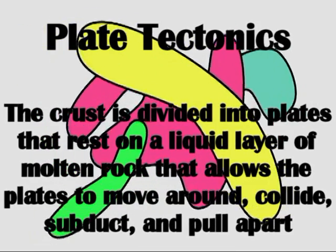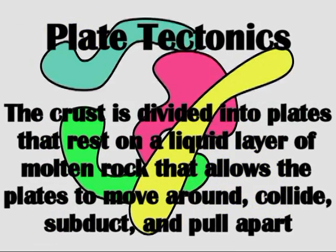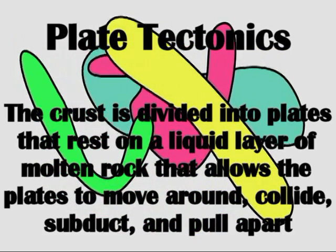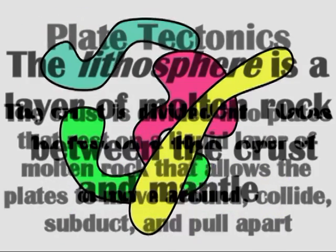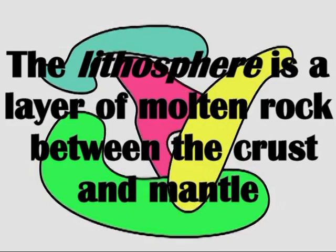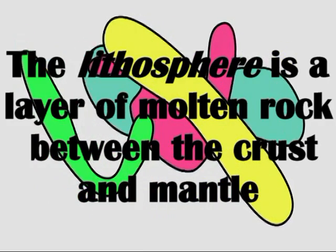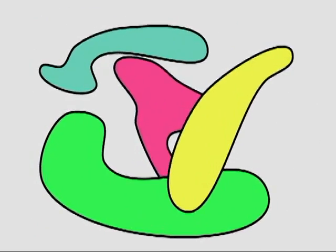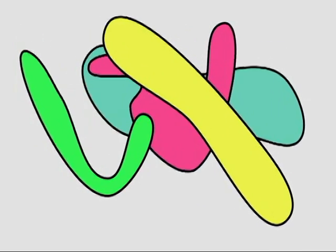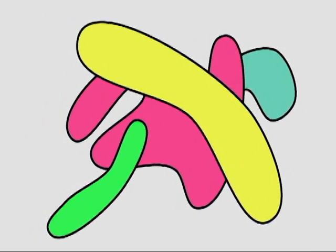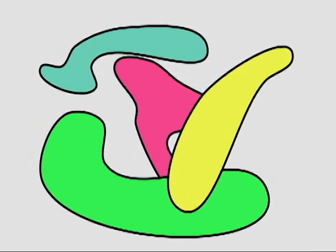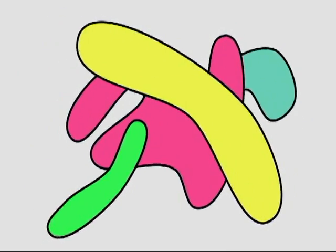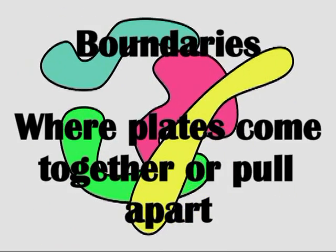But that's not the only way that new land is created. It's all based on plate tectonics and the idea that the crust is divided into plates that rest on a layer of molten rock. This liquid allows the plates to move around.